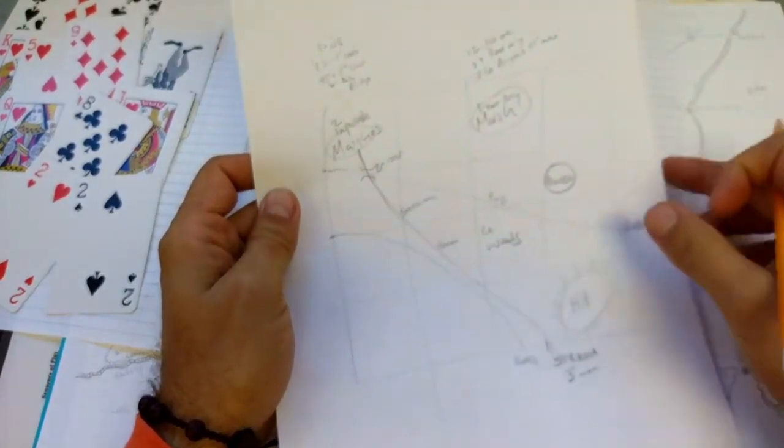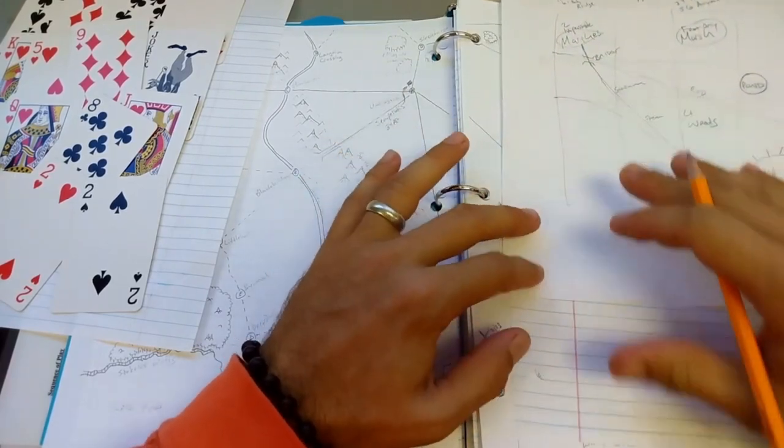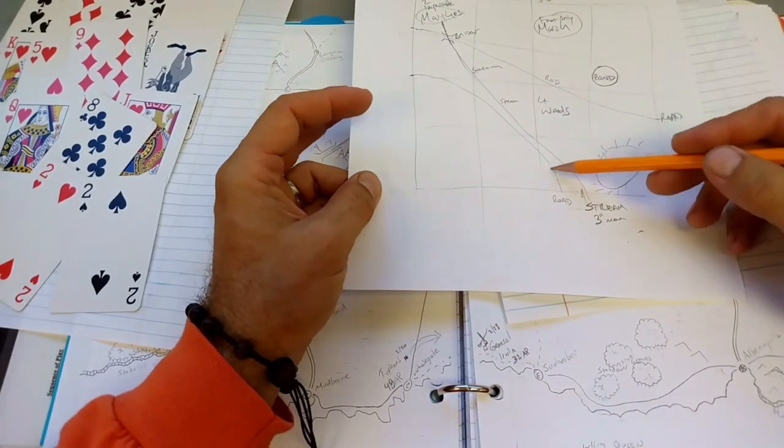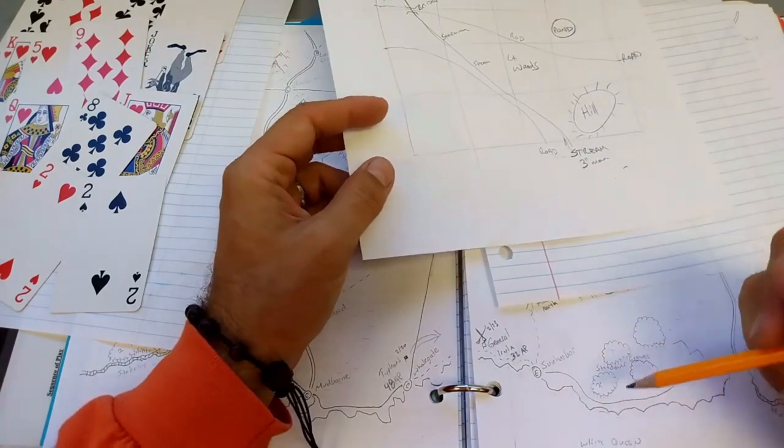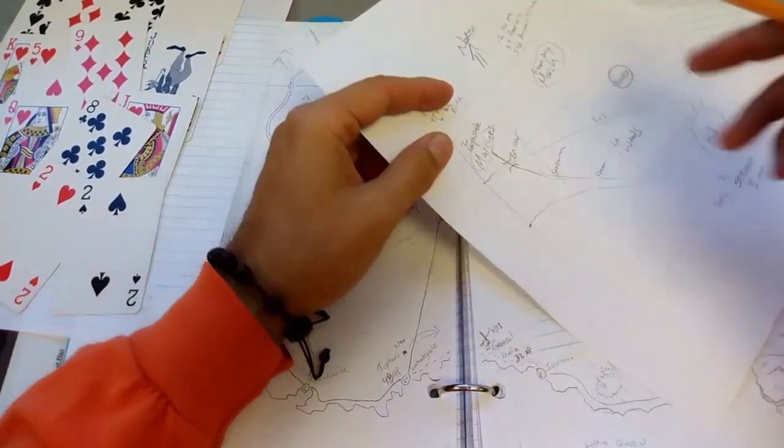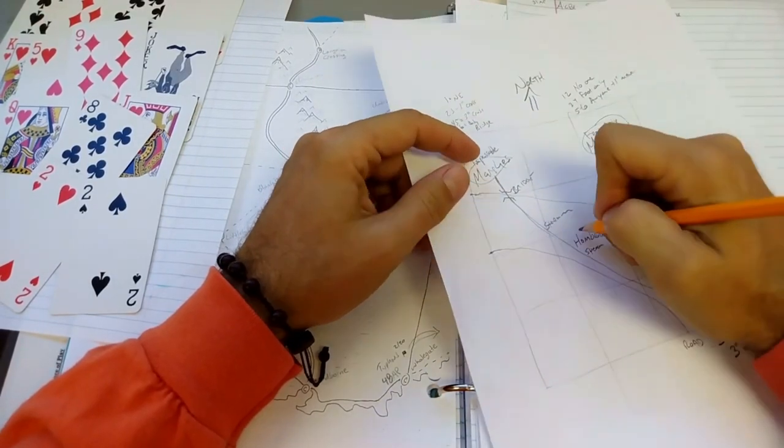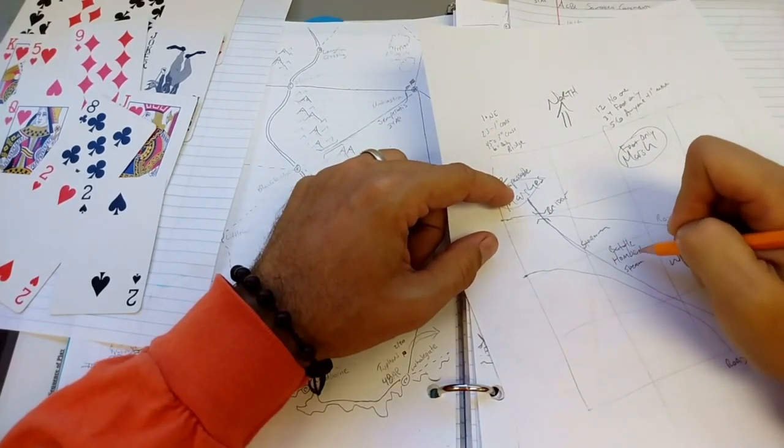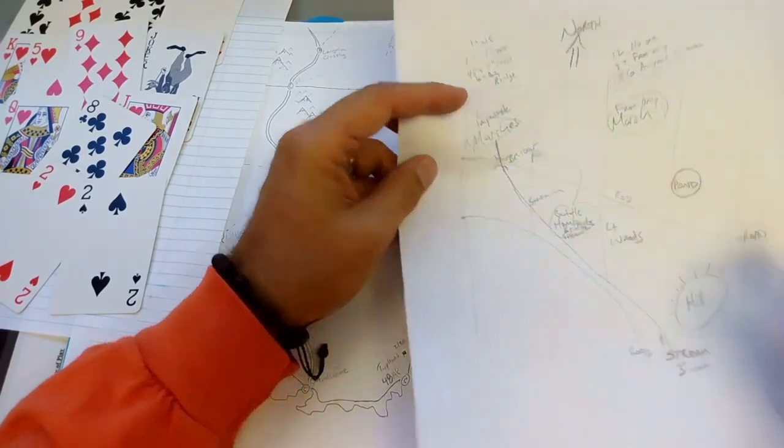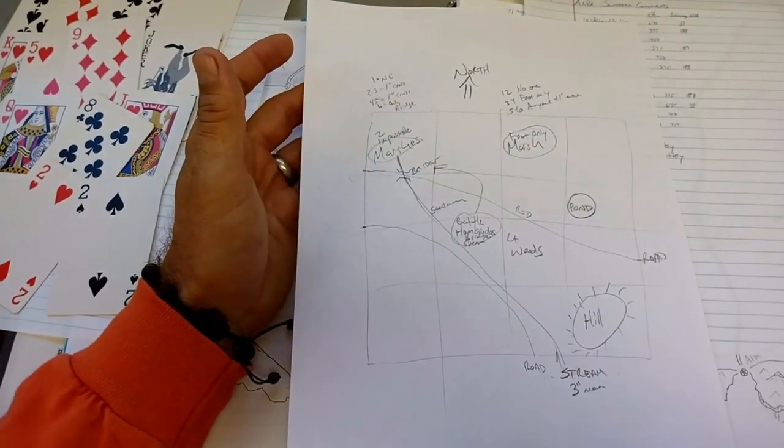Now we're getting somewhere. We've got some choices, some tactical decisions we're going to have to make. Again, I said this is going to be north. The coast is obviously fairly far down to the south. We're going to call this stream the Hombrados. So this will be the battle of Hombrados Bridge. Built by that famous bridge builder, Mr. Hombrados.